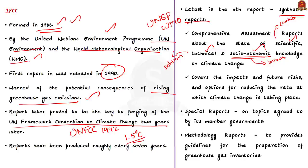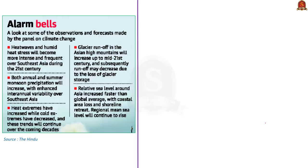These reports also cover future risks and the steps governments must take to mitigate climate change. IPCC also produces special reports on topics agreed upon by its member governments. Some observations noted by the sixth assessment report include heat waves and humid heat stresses becoming more intense and frequent over Southeast Asia during the 21st century.